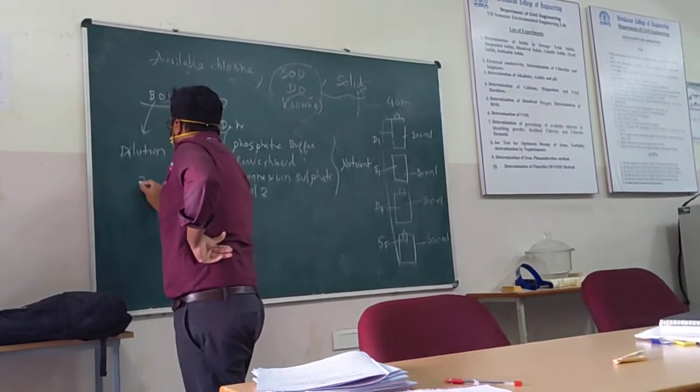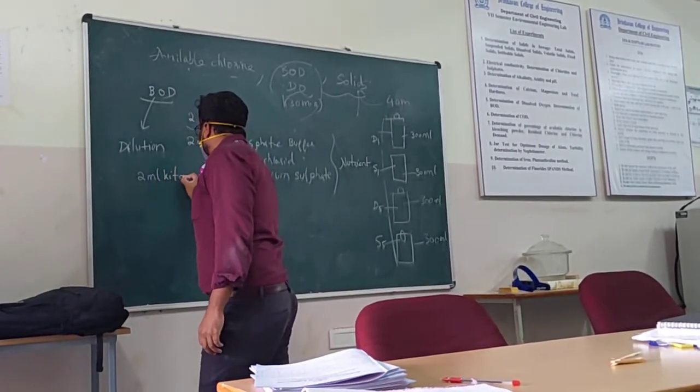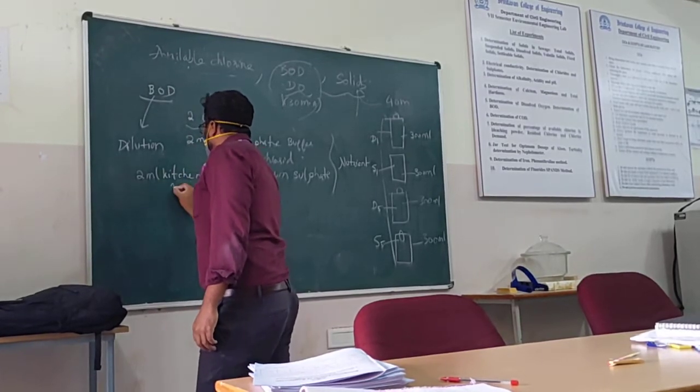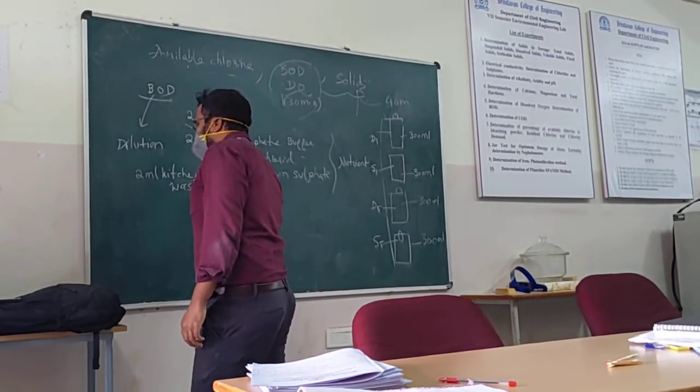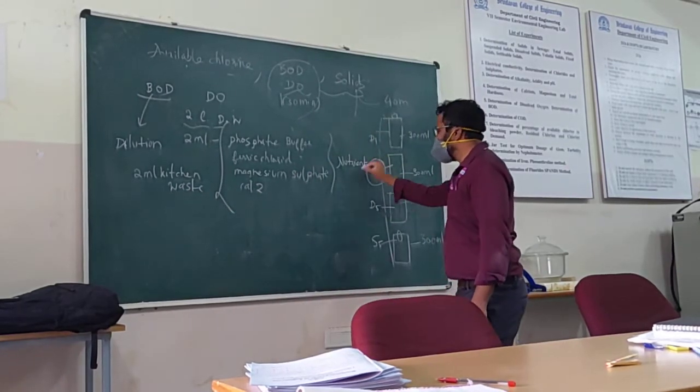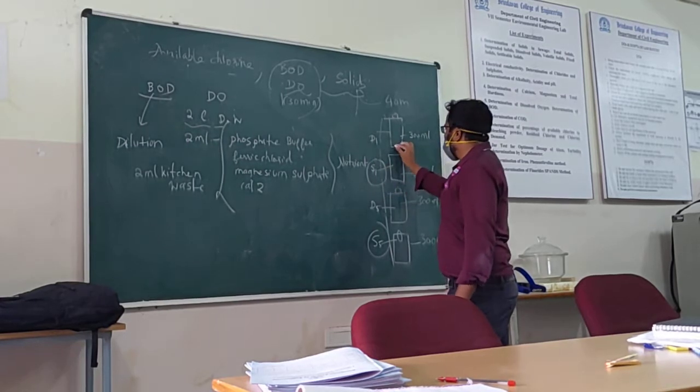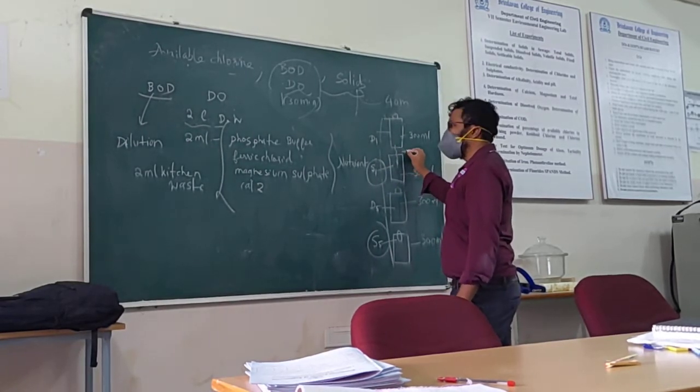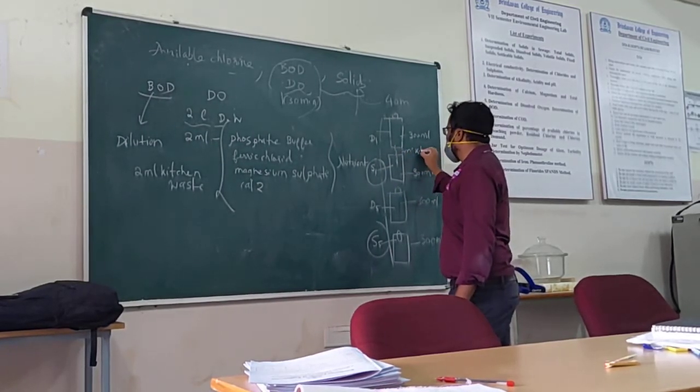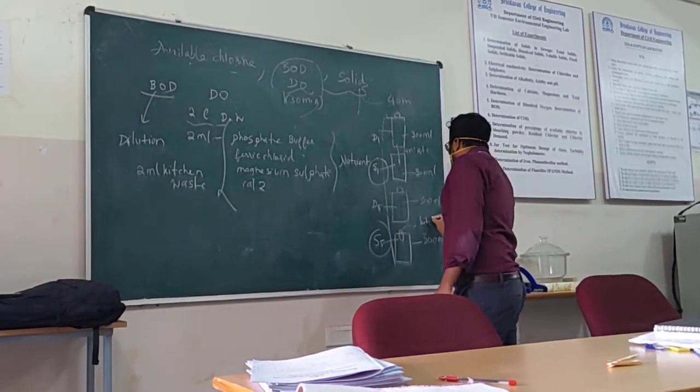So we take 2 ml of sewage sample and we will drop this to the S bottles I have. There we drop 2 ml of sewage sample. This one and this S1.